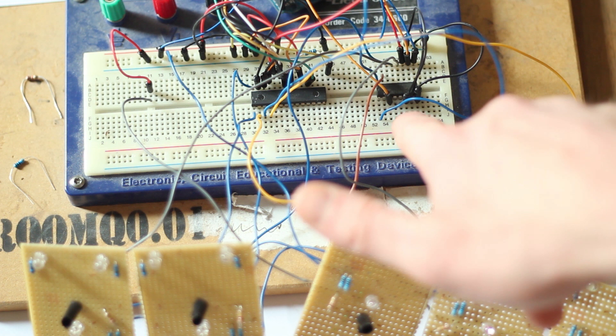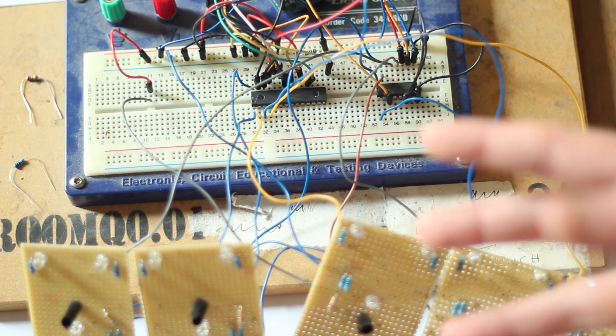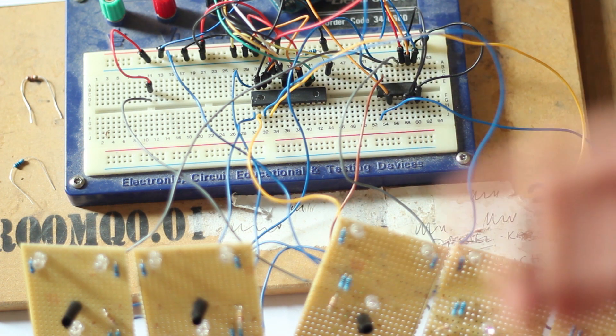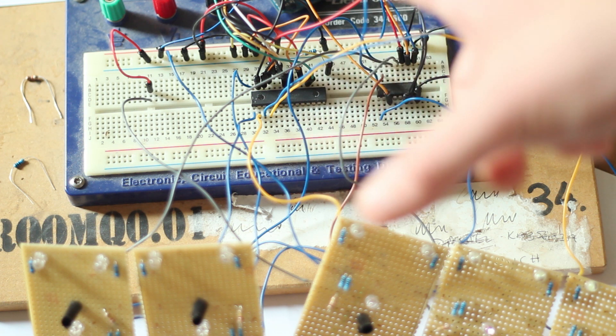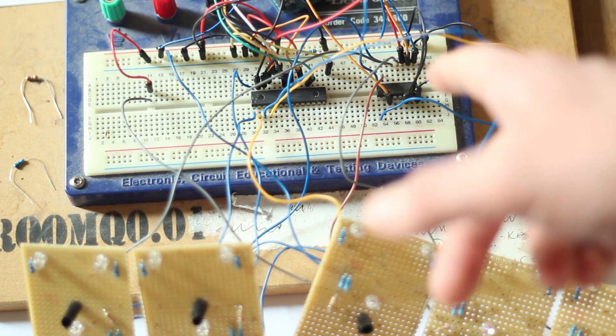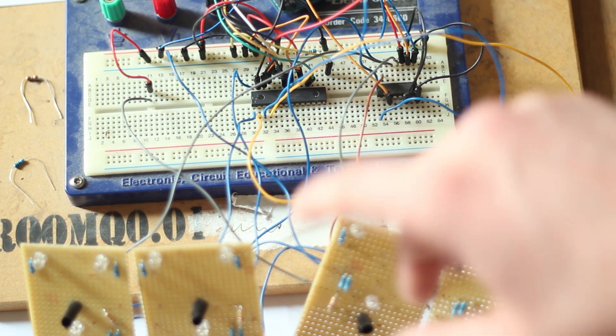We've also got a 4051 chip which is an analog chip which takes in eight analog signals and will kick it out over one analog line, meaning I only need to use one analog pin on the Arduino. And that's great because they can be daisy chained together just like the TLC5940. So we could expand this out and scale it up to have many more of these.